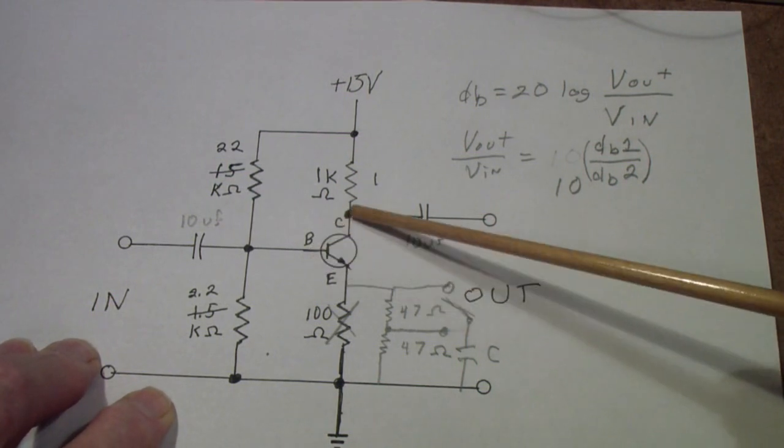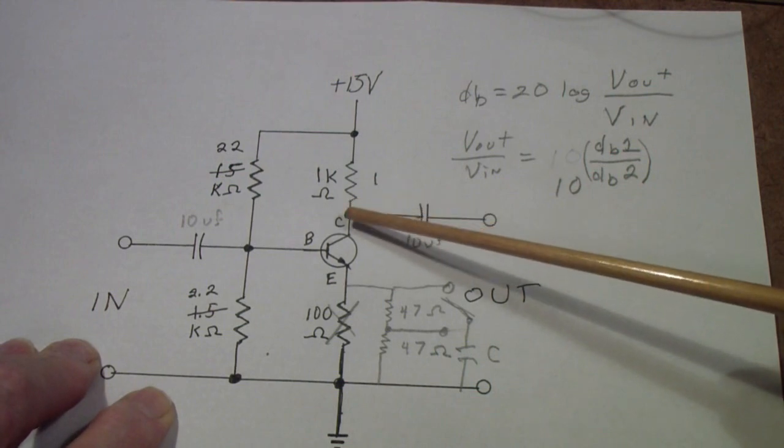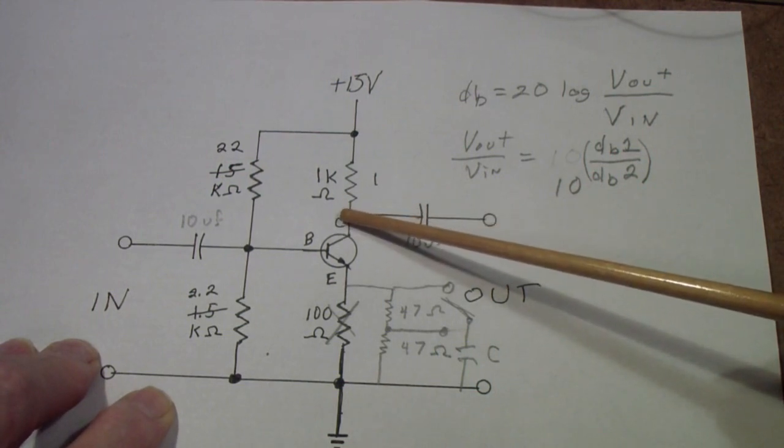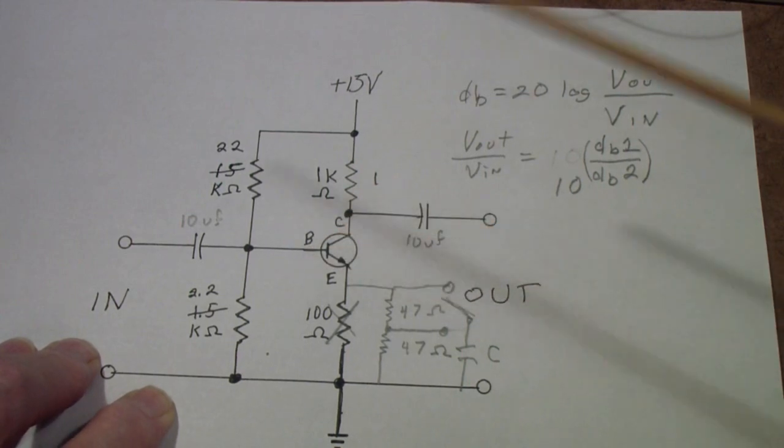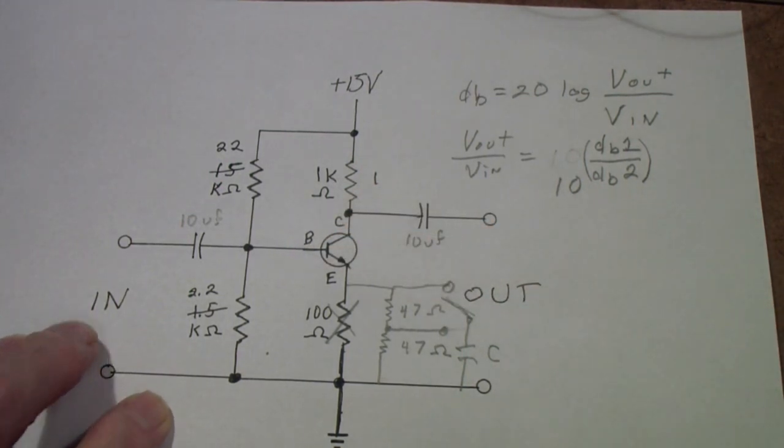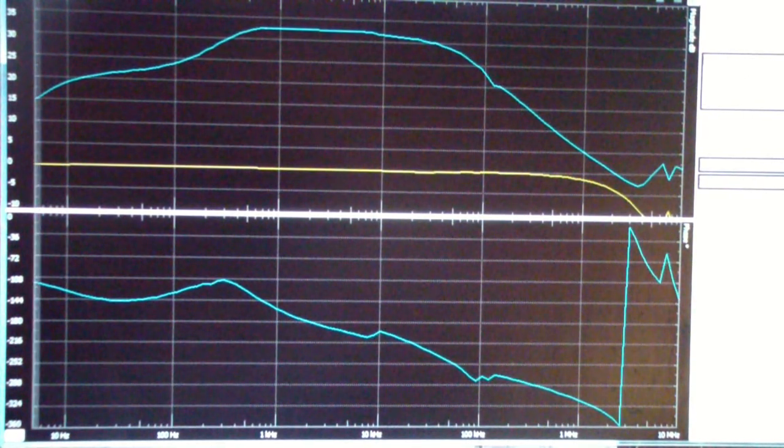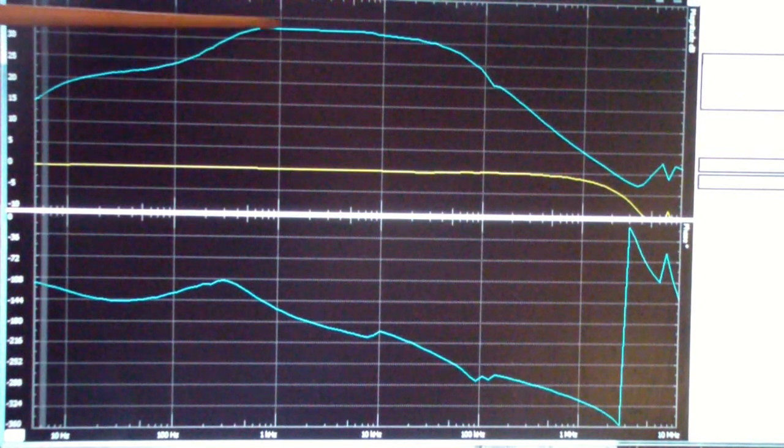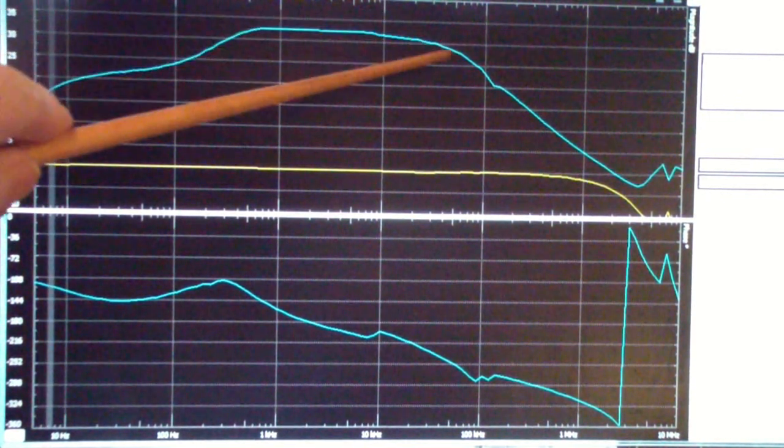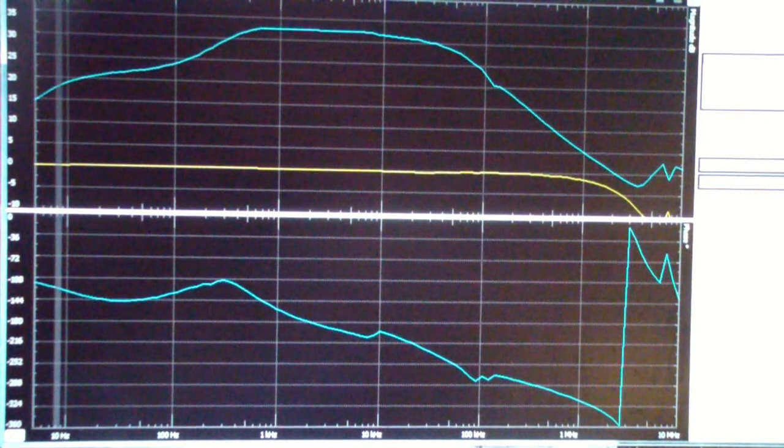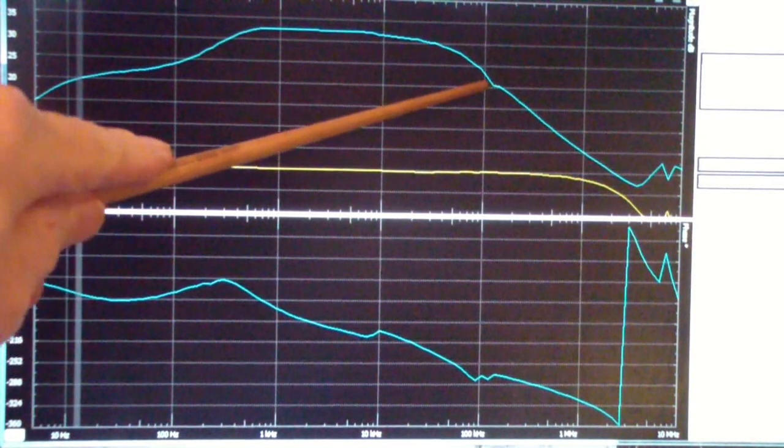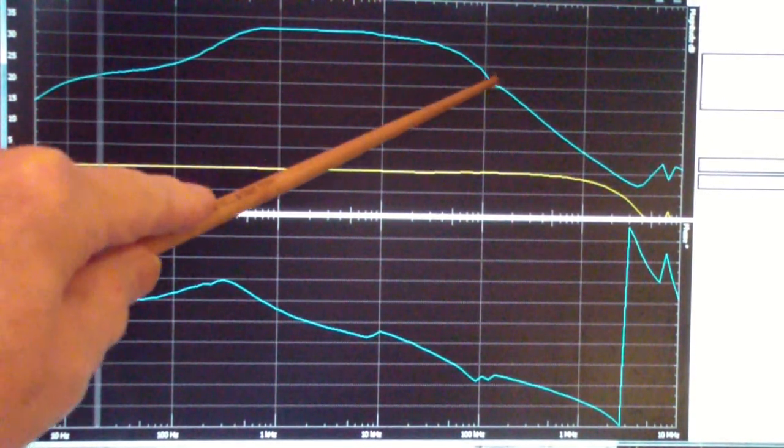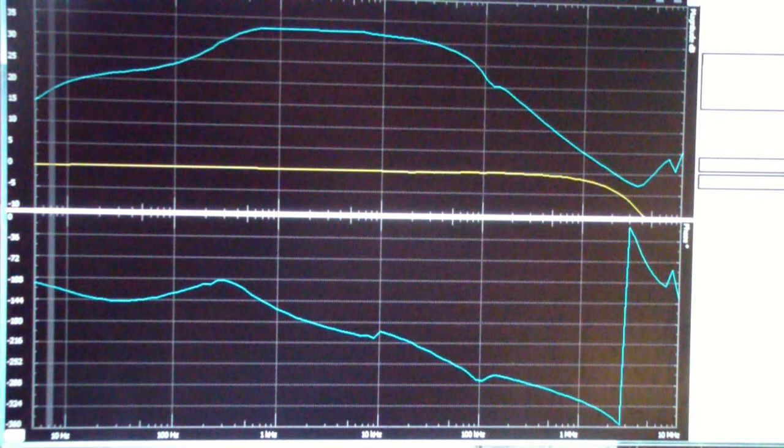Remember, we saw earlier that this circuit begins to fall off a little above a megahertz. What we're going to do is we're going to insert a little extra capacity from the collector to the base and see what happens to the frequency response. I've reinserted the bypass capacitor in the emitter, which is why the gain goes up, and I have also inserted a feedback capacitor from base to collector, which is why the gain falls off quicker.